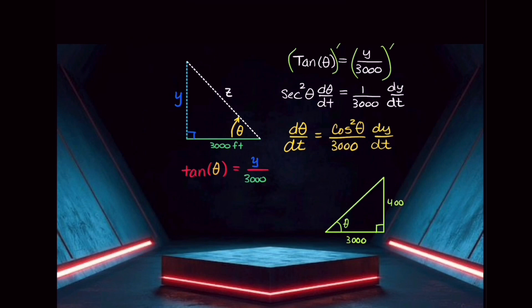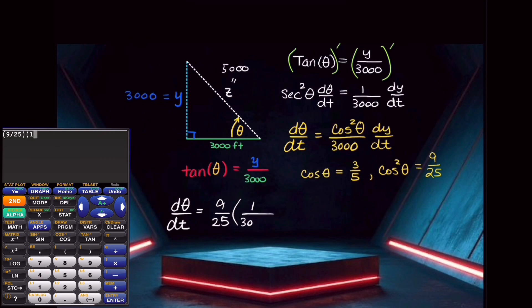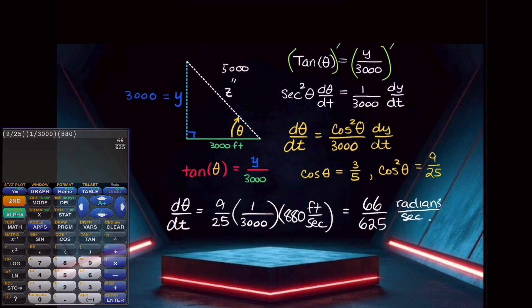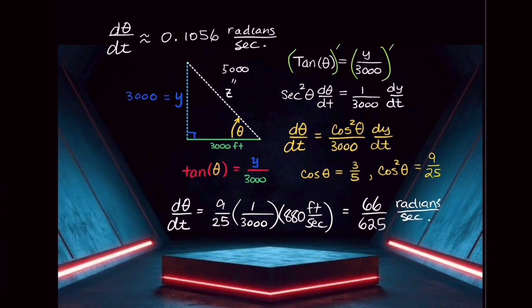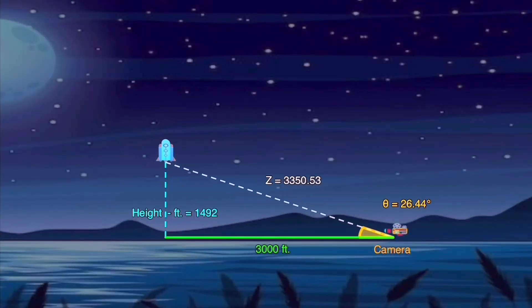Now, using another right triangle here, the one with the select values, 3,000, 4,000, and 5,000 feet in there, we find that the value of cosine of theta is equivalent to 3 fifths. So we can substitute that value into our related rates equation here. And so we have, again, dy dt is 880 feet per second, giving us d theta dt is equal to 9 over 25 times 1 over 3,000 times 880 feet per second, which is 66 over 625 radians per second. Or, if you like, d theta dt is approximately 0.1056 radians per second. And for you degree lovers out there, we could translate that, and that's approximately 6 degrees per second. So that's how fast your camera would have to elevate in order to keep its view of the rocket. Level 4 complete.